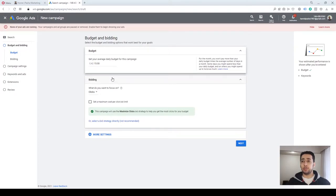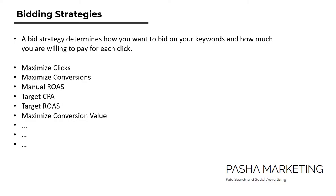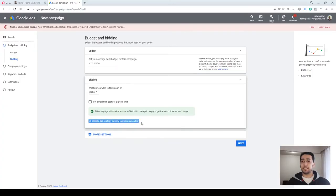Now we are going to choose our bidding strategy. A bid strategy determines how you want to bid on your keywords and how much you are willing to pay for each click. There are many options, both automated and manual. Some options include Maximize Clicks, Maximize Conversions, Manual ROAS, Target CPA, Target ROAS, Maximize Conversion Value, and others depending on your goal, strategy, and campaign type. There is a small text which says 'Select a bid strategy directly — not recommended.' Even though Google says it's not recommended, this is actually the most recommended approach when selecting a bid strategy for your campaign.